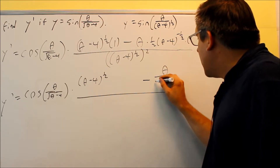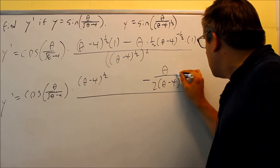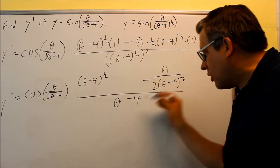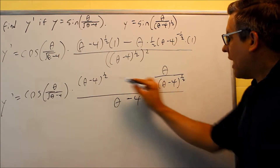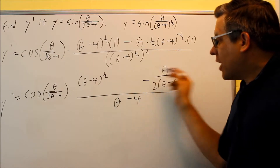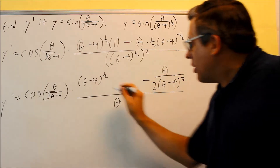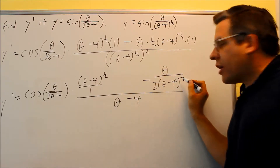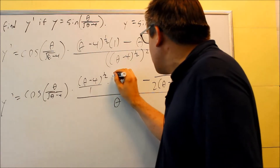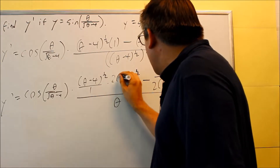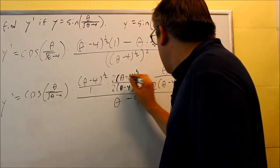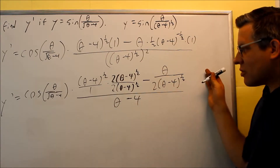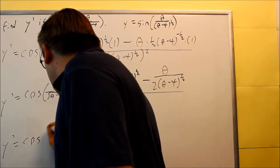Cleaning up the quotient: on top I have theta, on the bottom I have 2 times theta minus 4 to the one-half power. On the bottom I also have theta minus 4 — multiplying the exponents gives a power of 1, so just theta minus 4. Now I need to combine this into a single fraction by getting a common denominator of 2 times theta minus 4 to the one-half. The first term is missing that, so I multiply top and bottom by 2 theta minus 4 to the one-half.